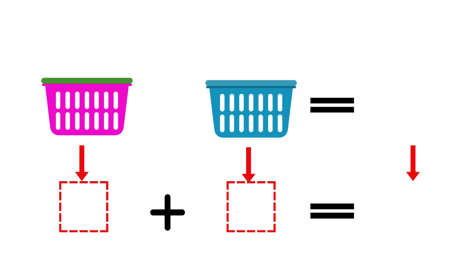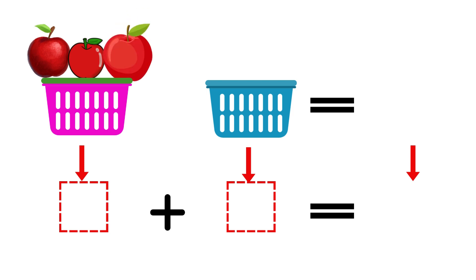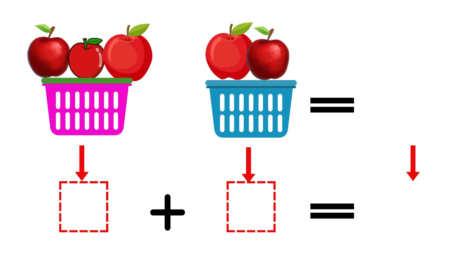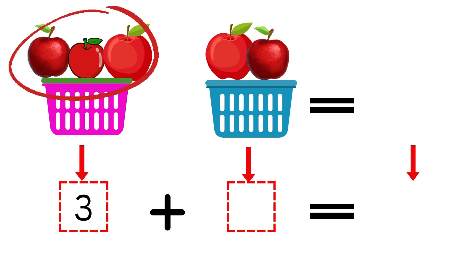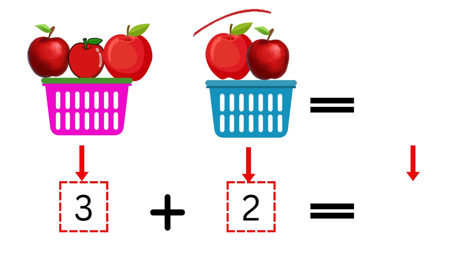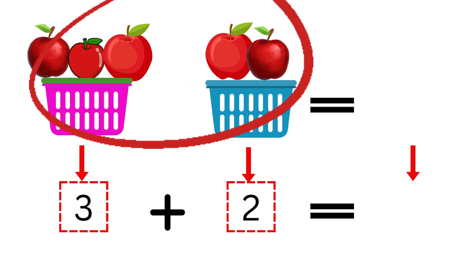Now, look at these two baskets. In the pink basket, I am putting one apple and now one more and now one more. In the blue basket, I am putting one apple and one more. In the pink basket, I am putting three apples. In the blue basket, I am putting two apples. Now, tell us how many apples are there on the table. How many apples are there in total?